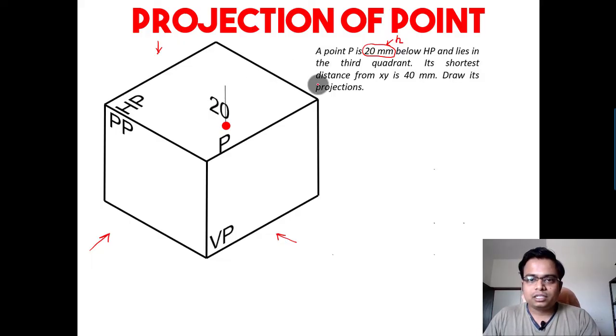Its shortest distance from xy. Now guys, this over here, this is x, this is y, this is the intersection of HP and VP. Now there are n number of points, infinite points along this xy line, but what we are really interested in is the shortest distance from xy line.